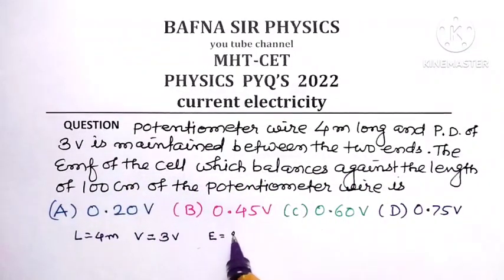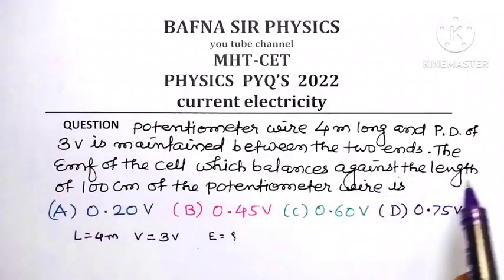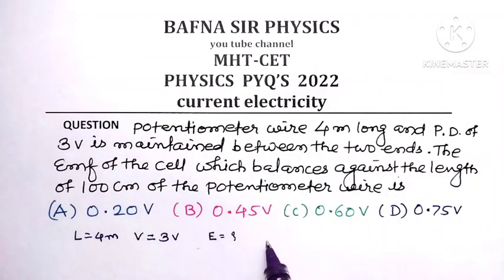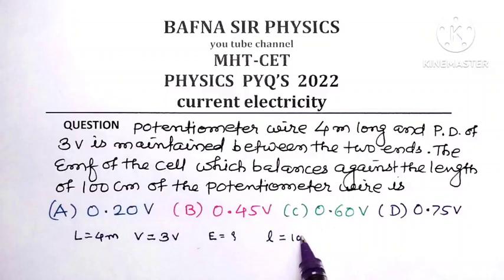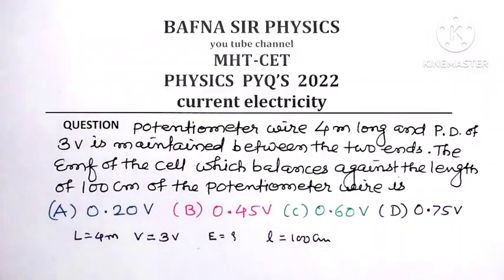The EMF of the cell balances against the length of 100 centimeters (L = 100 cm) of the potentiometer wire. According to the principle of the potentiometer, this EMF E is directly proportional to the balancing length, or E is